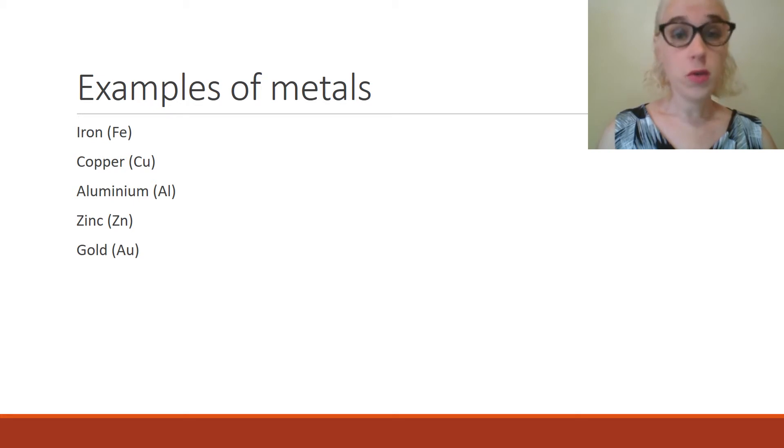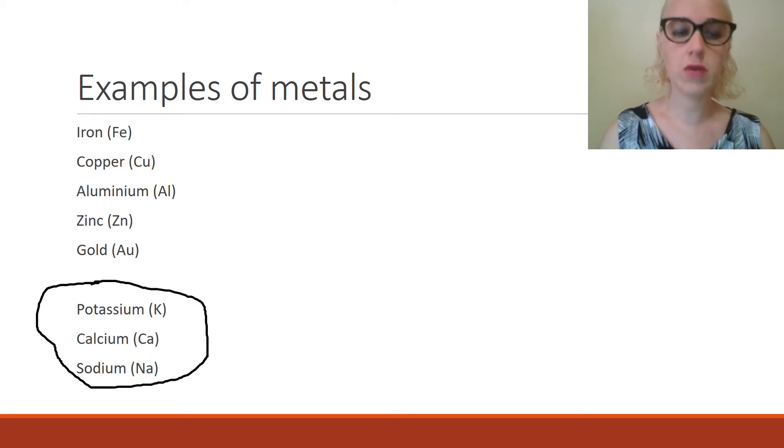The sorts of metals that might not spring to mind when you think of something metallic are things like potassium and calcium and sodium. Now these are all metals, but you can't go and buy a potassium bar the way you can buy an iron bar. You can't go and buy calcium wire the same way you can buy copper wire. You can't go and get sodium foil the same way that you can get aluminium foil, and that's because these guys are very reactive metals, and so they usually exist in their ionic form and bound to something else as a compound.